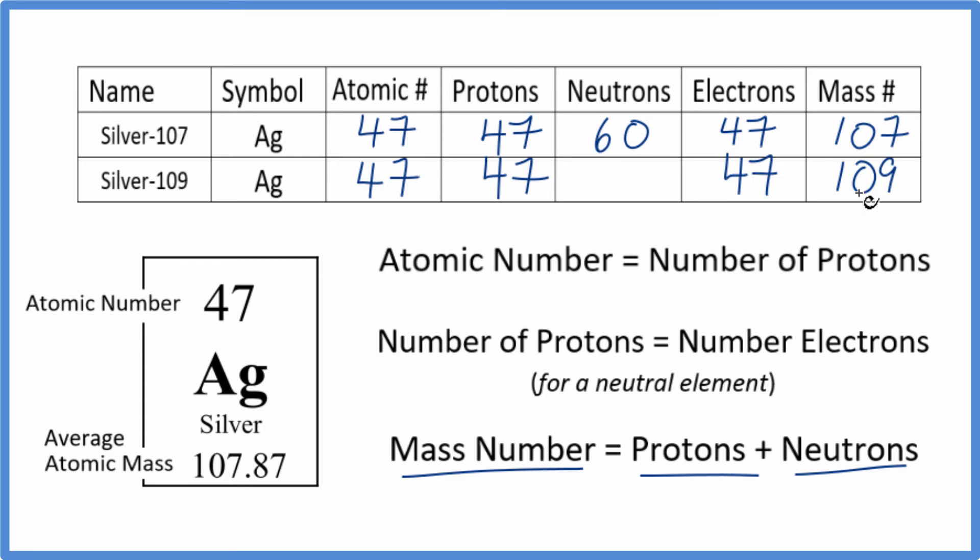You can also take the mass number and subtract the number of protons to find neutrons. 109 minus 47, that would give you 62. Either way, you'll get the same answer.